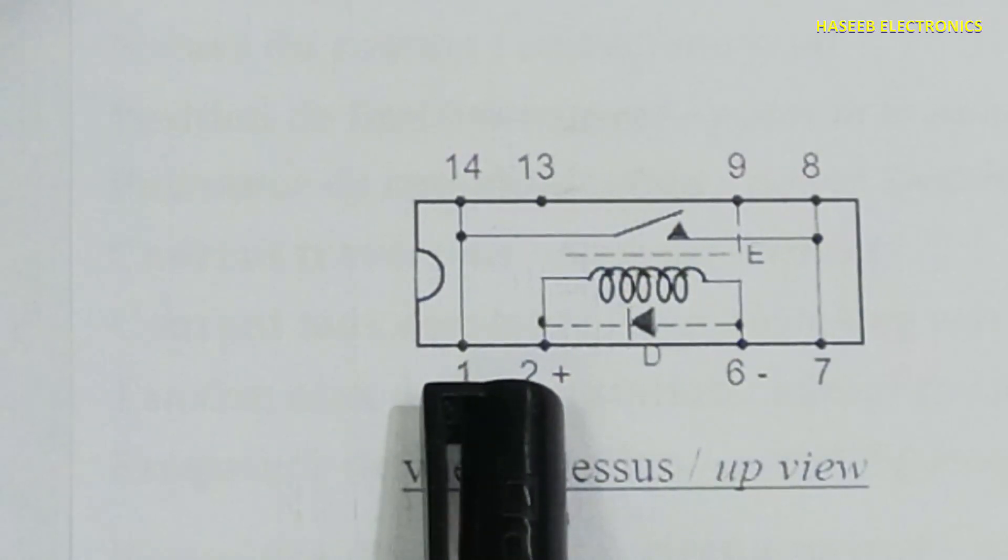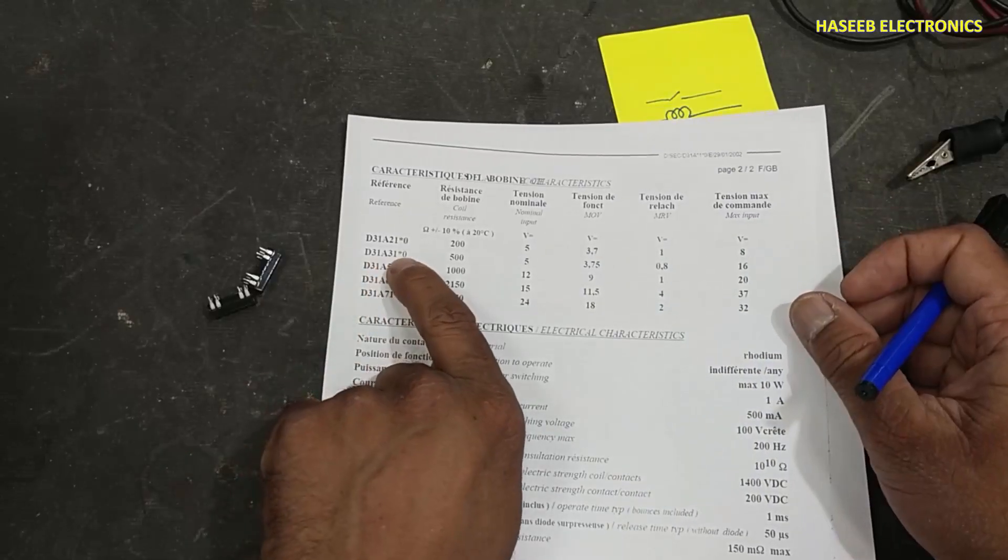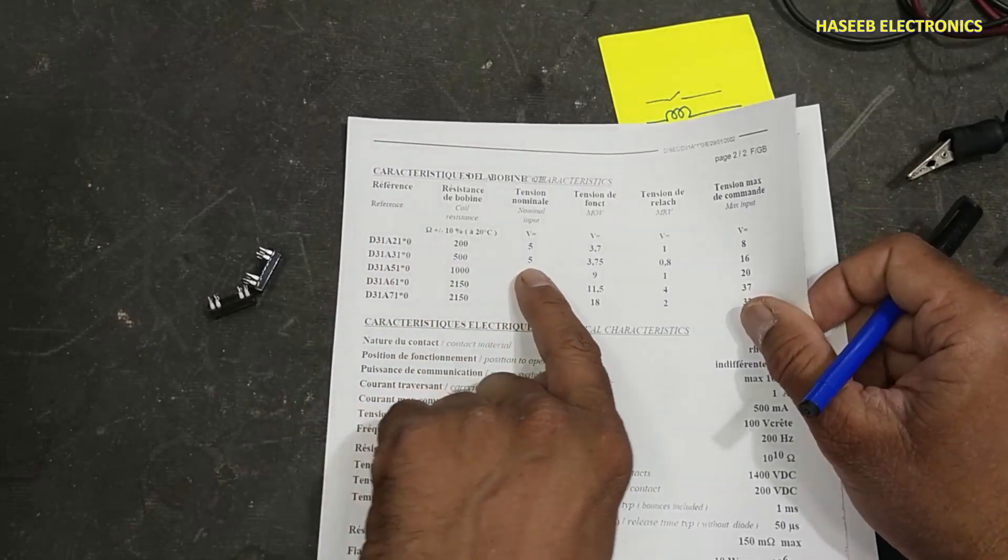It will make connection between pin number 1 and 7. D31A 3140 coil resistance is 500 ohms, operating voltage is 5 volts.